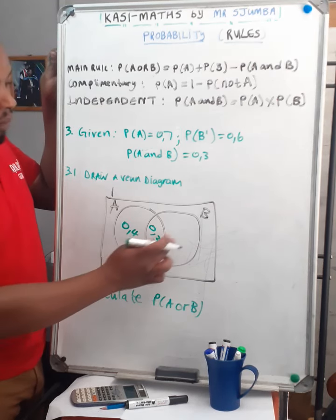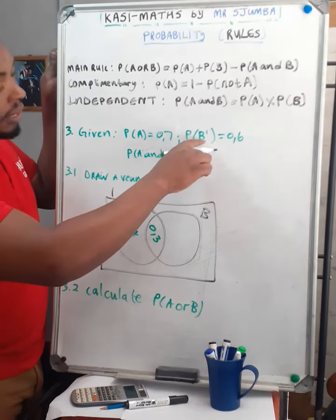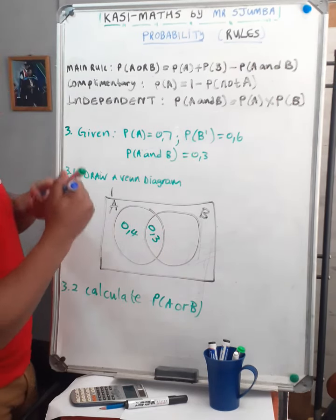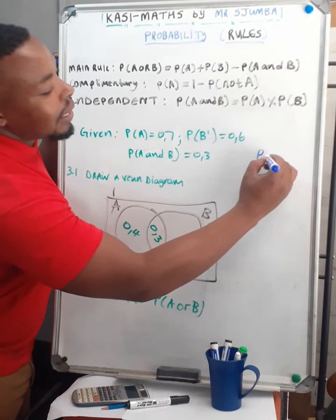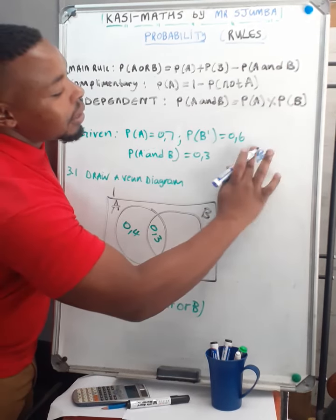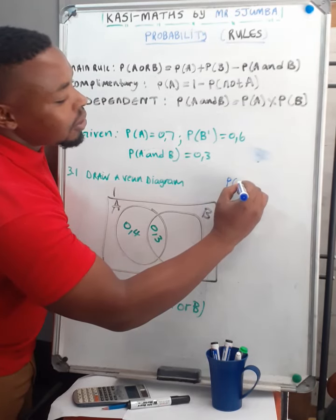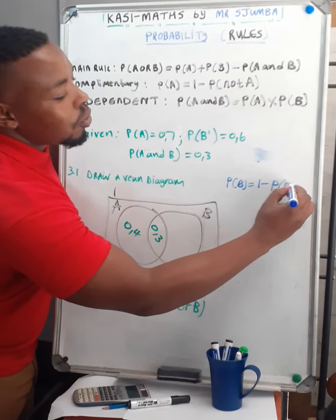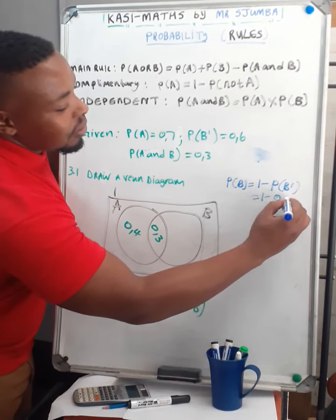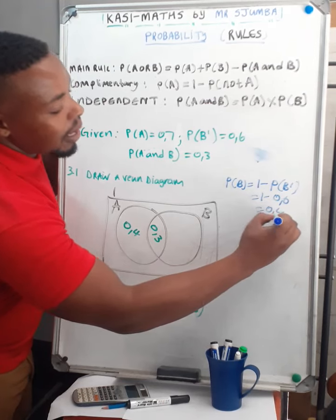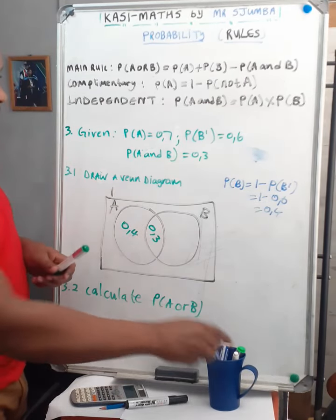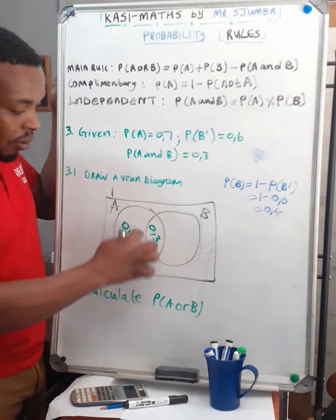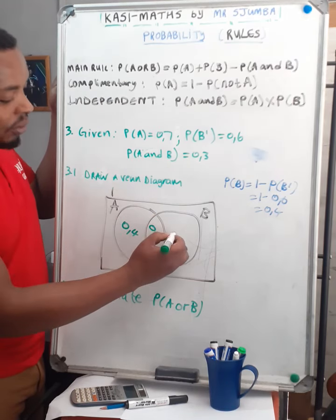Since we have the probability of not B equal to 0.6, we can find probability of B: probability of B equals 1 minus probability of not B, so 1 minus 0.6 equals 0.4. The whole B circle should be 0.4.